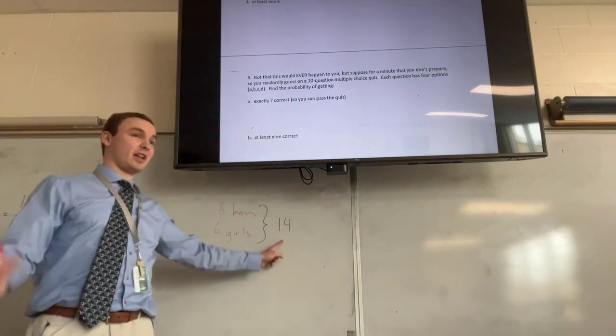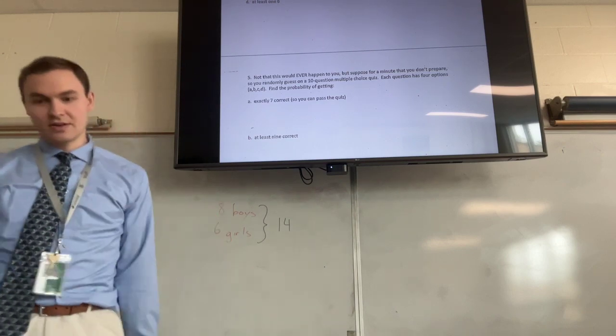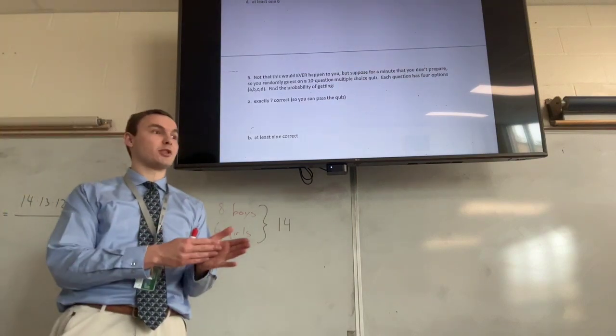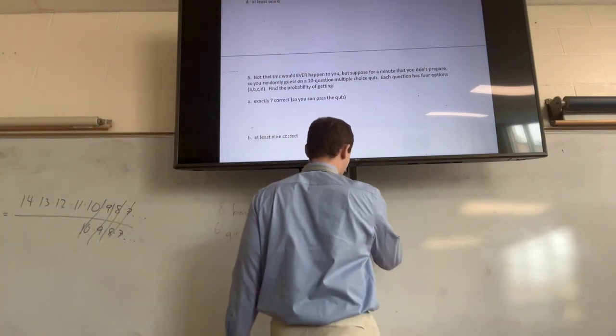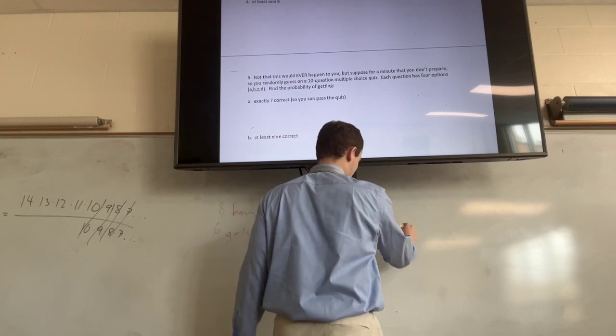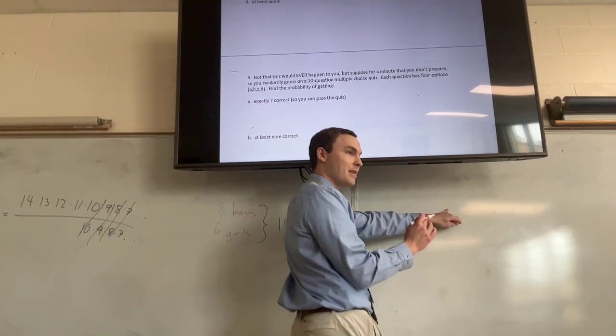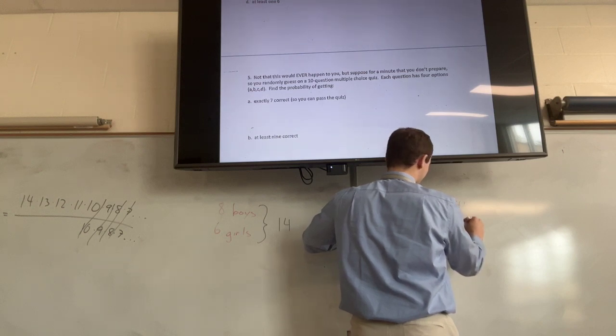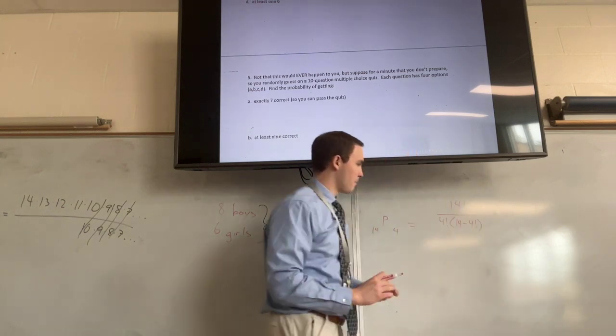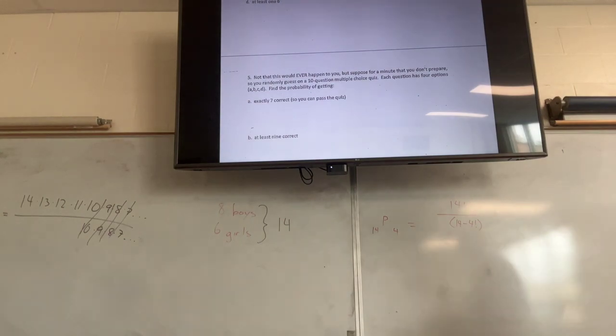So it's going to be 14 permute four. What's the write-out point? If you remember combination, combination is 14 factorial over 4 factorial times 14 minus 4 factorial. Permutation is the exact same, just erase the 4 factorial.